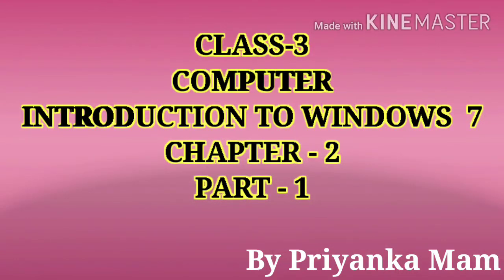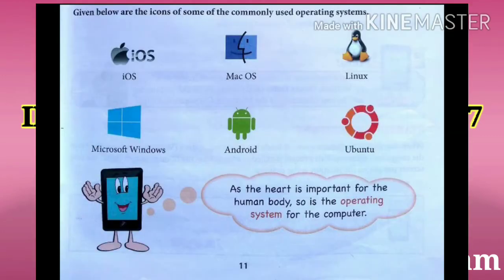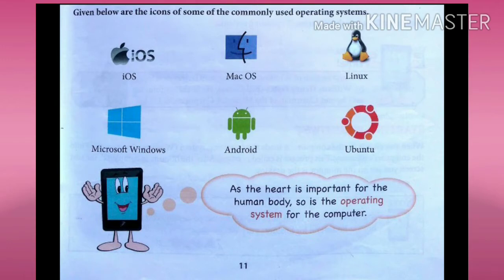Hello my dear students, welcome to your computer class. It's the second chapter of your computer book: Introduction to Windows 7. As you can see, given below are the icons of some of the commonly used operating systems. Just as the heart is important for the human body, so is the operating system for the computer.